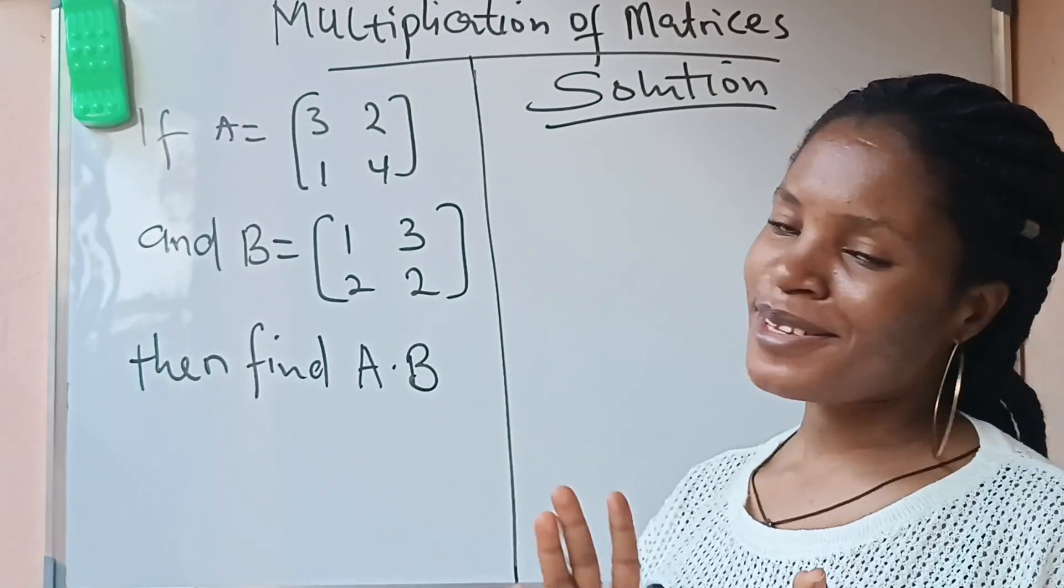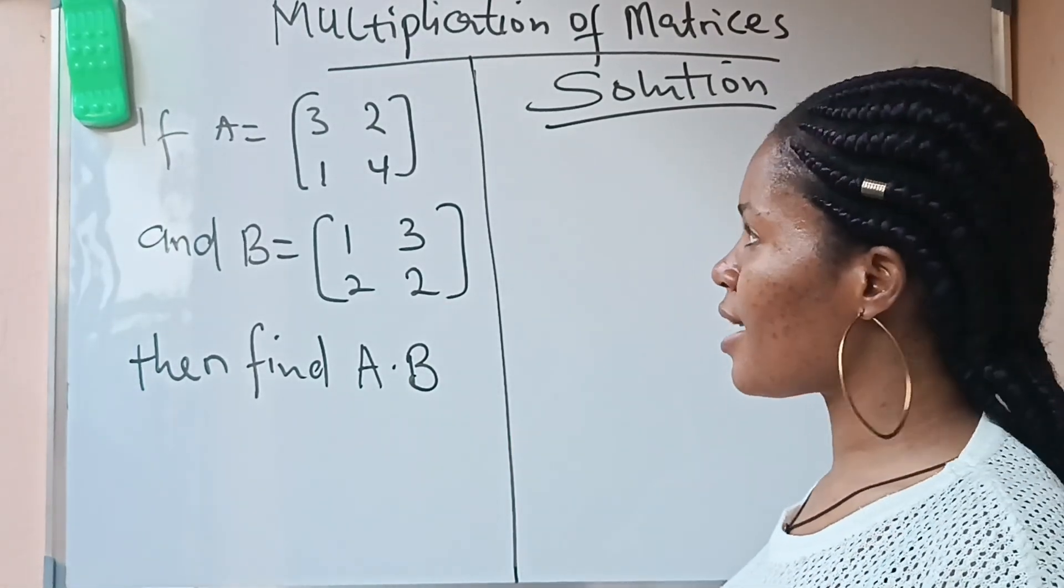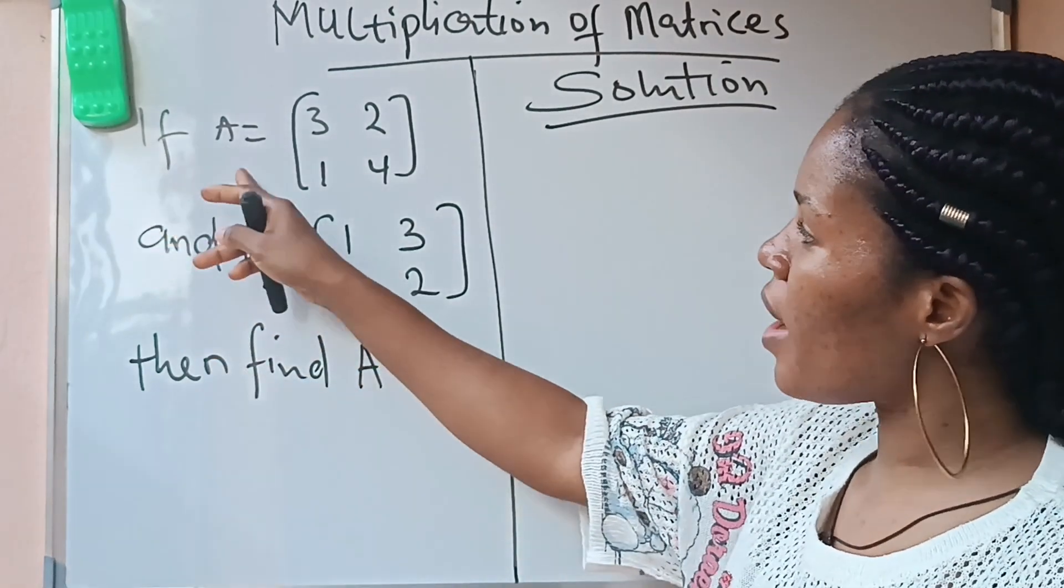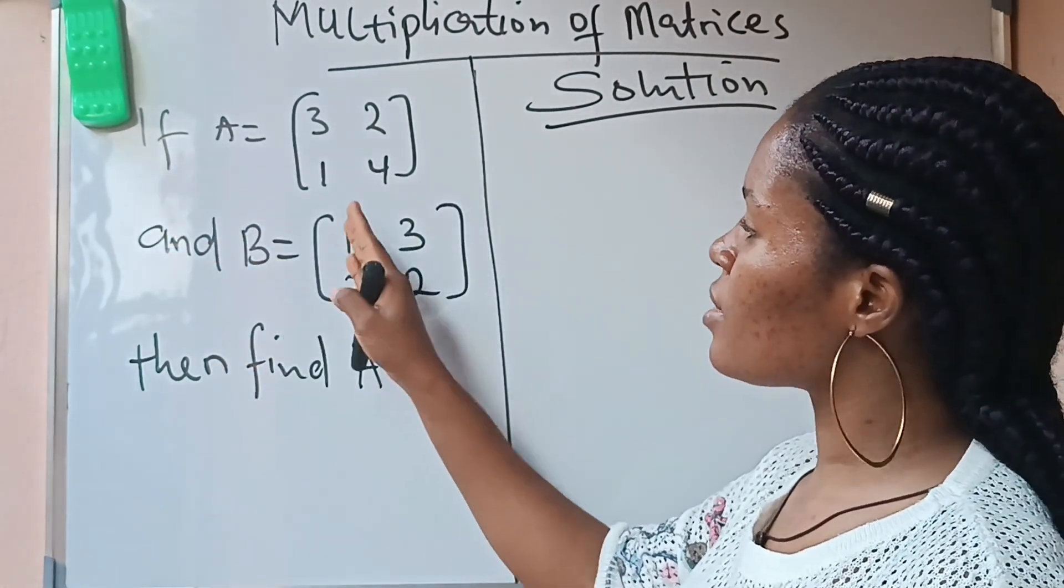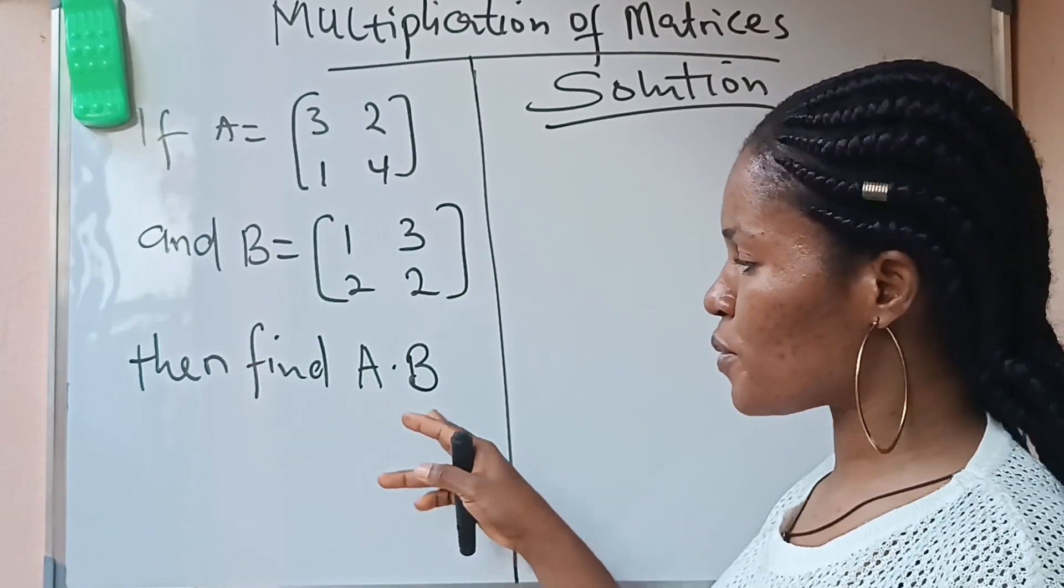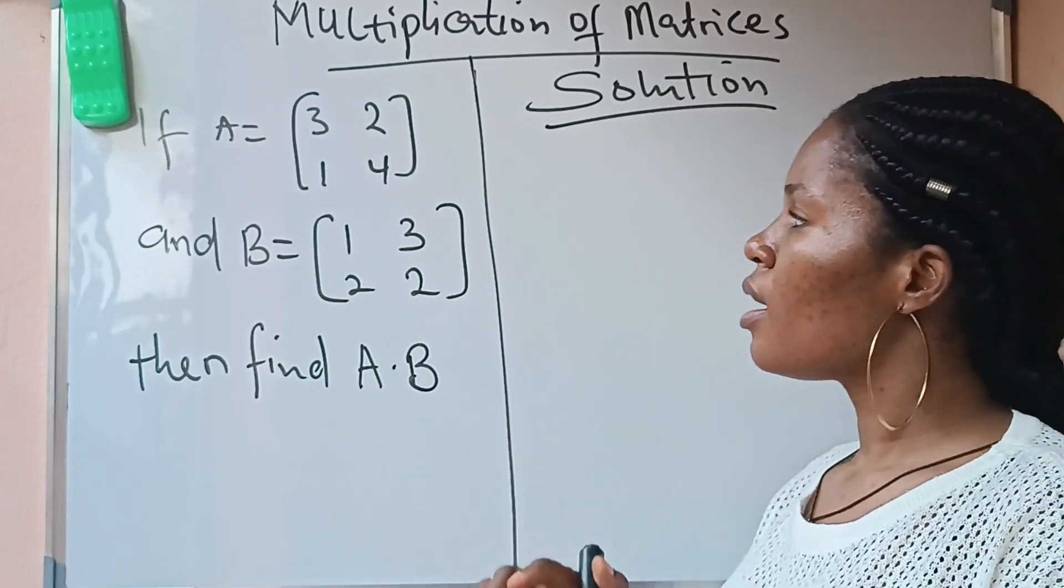Hello everybody, welcome to my channel. In today's lesson, we are asked if A equals this and B equals this, so we are asked to find A·B, that is A times B.